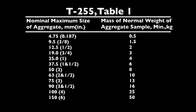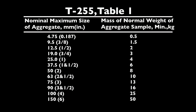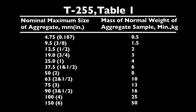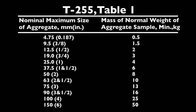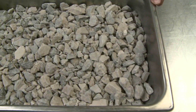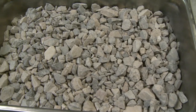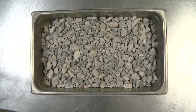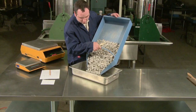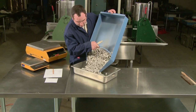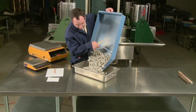Table 1 lists minimum sample sizes for aggregates of differing nominal maximum sizes. The depth of the sample must not exceed one-fifth of the container's narrowest width. Make certain that the sample mass meets the minimum requirement.